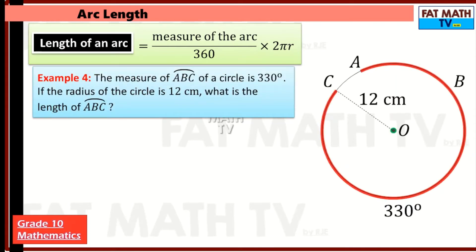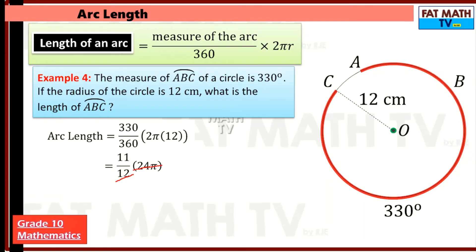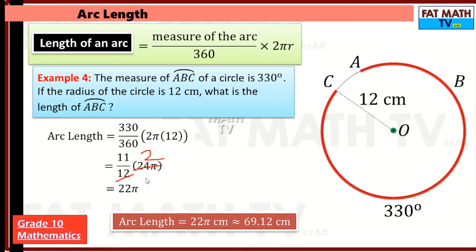Another example: the measure of arc ABC of a circle is 330 degrees. If the radius is 12, what is the length of arc ABC? Using the same formula — 330 over 360 times 2π times 12. Divide both by 30: 330 divided by 30 is 11, and 360 divided by 30 is 12. Then 2π times 12 is 24π. Cancel 12 and 24 by dividing by 12, giving 2. So 11 times 2 is 22π. The length of the arc is 22π, or approximately 69.12 centimeters.